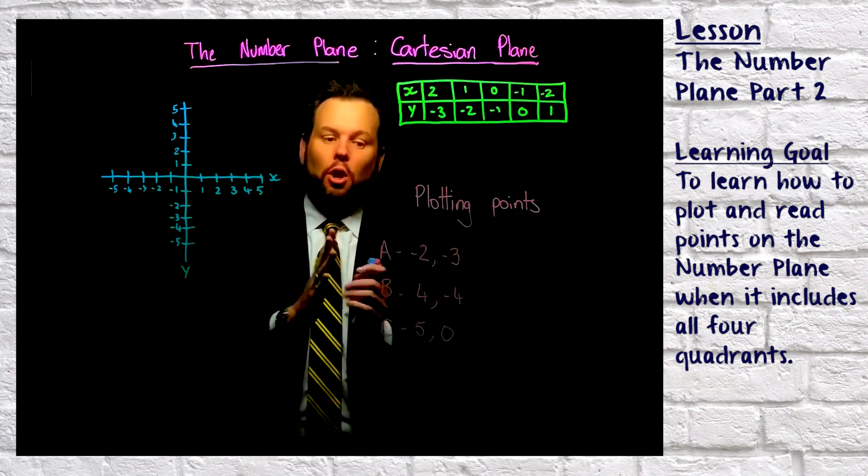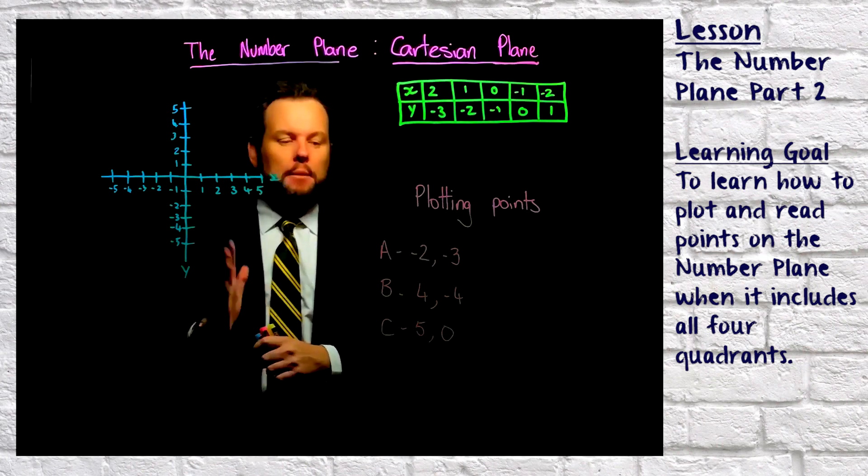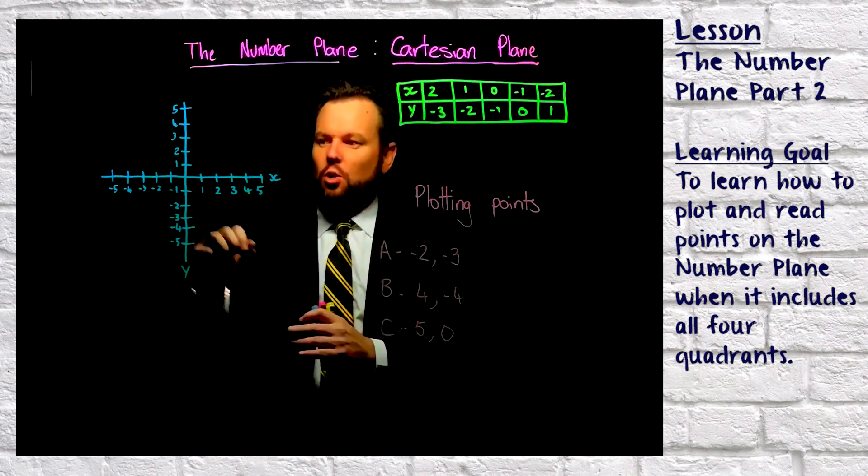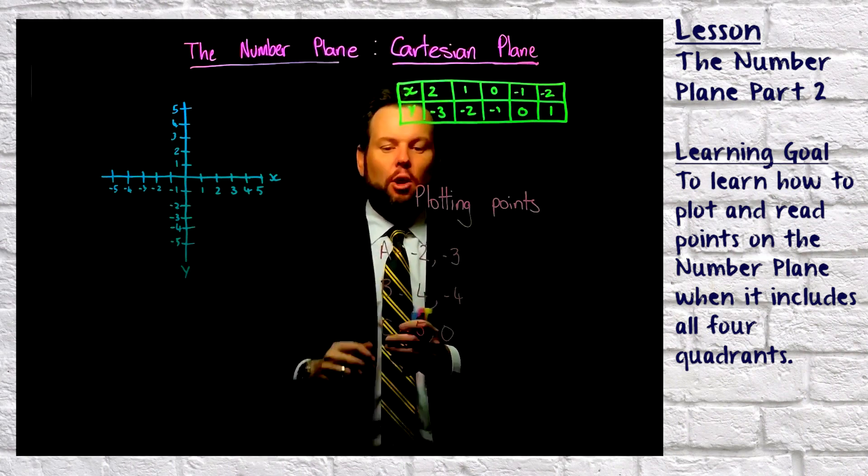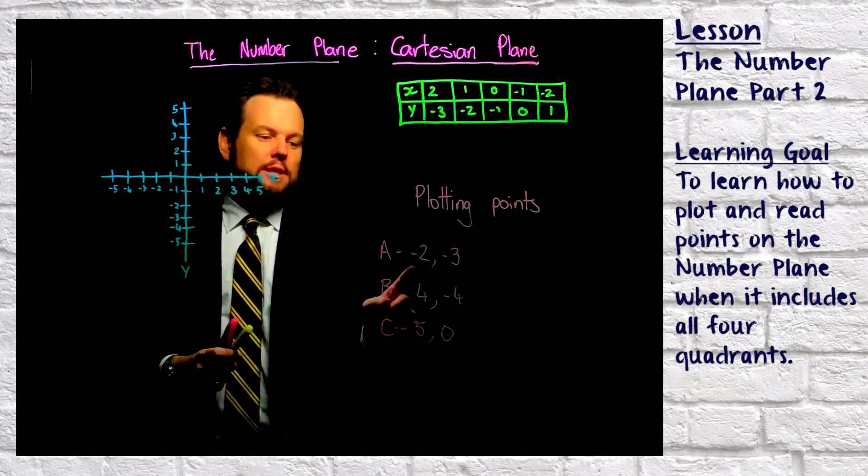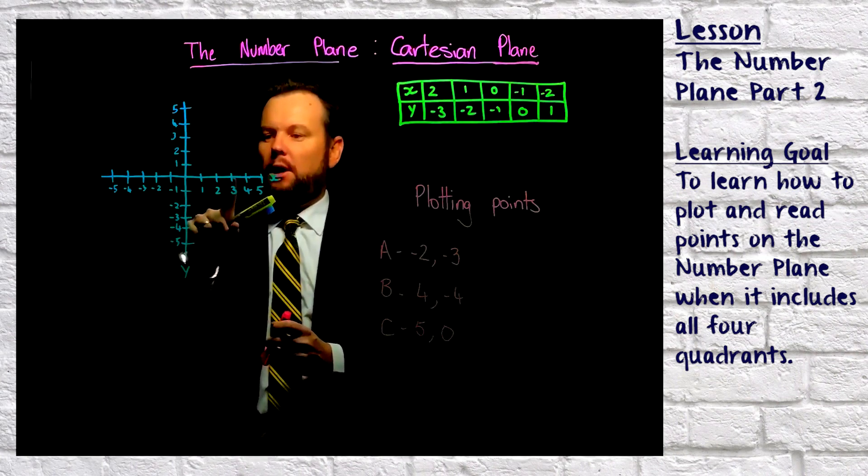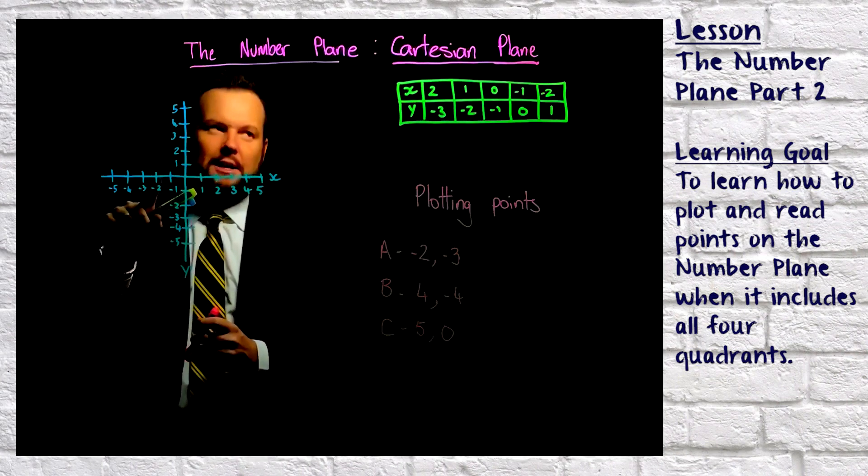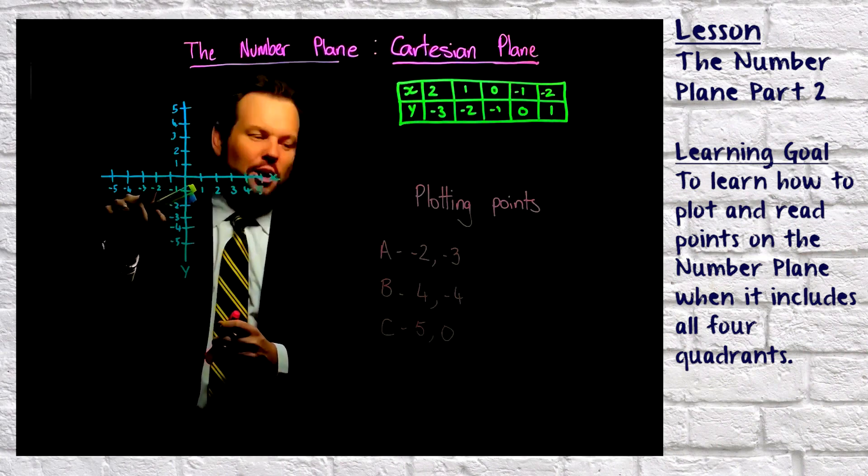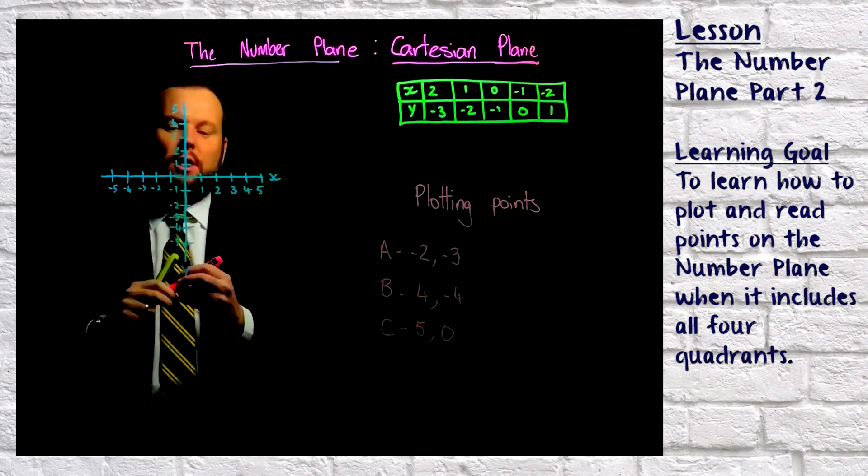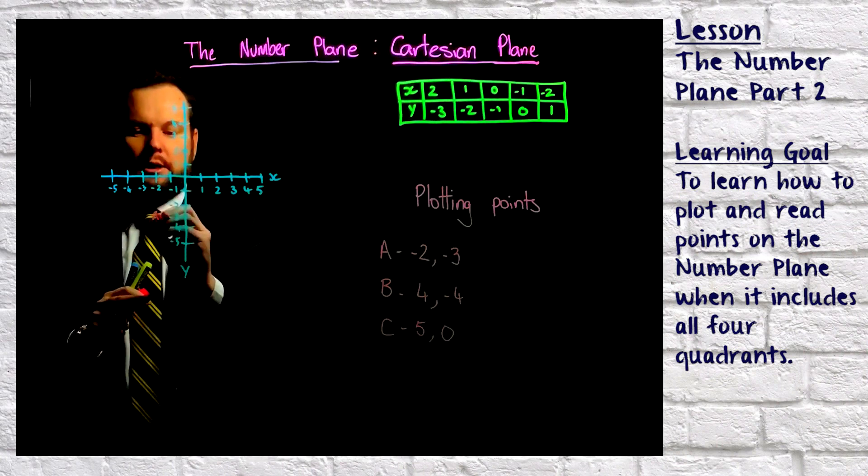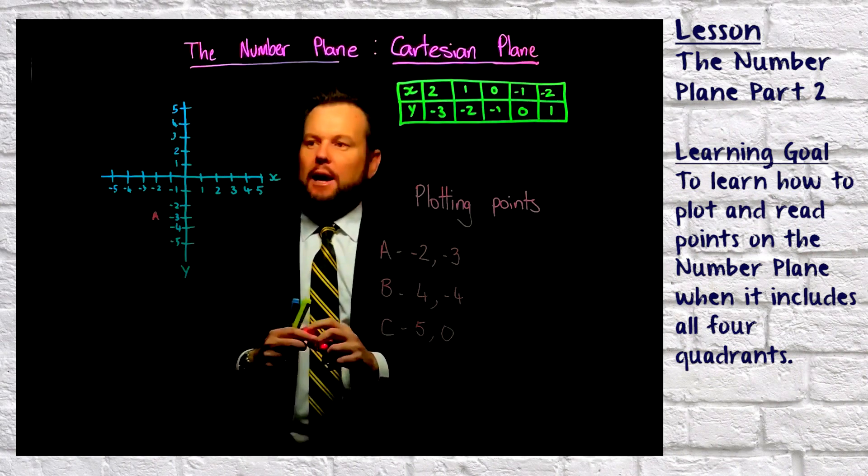So let's have a look at plotting points first. Once again, you need to make sure that you crawl before you climb up or down. We're going to plot point A and we're going to start at negative two. So here we are on our x-axis, and we're going to go to negative two, and then we've got to come down to negative three. So this is where I'm going to put point A. That's where A lives.